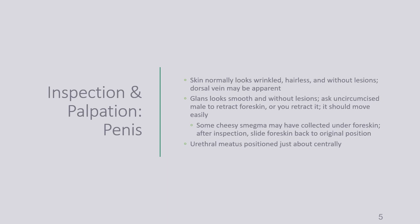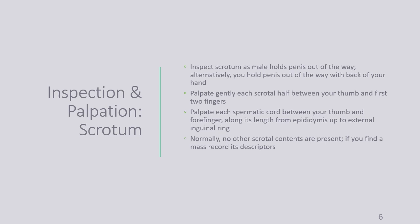The urethral meatus should be positioned centrally at the tip of the glans. Inspect the scrotum as the male holds the penis out of the way, or use the back of your hand to displace the penis to the side. Palpate the scrotal skin between your thumb and first two fingers, feeling for the spermatic cord and making sure you don't feel any masses. Palpate the spermatic cord along its length from the epididymis up to the external inguinal ring — there should not be any other masses or lumps present.